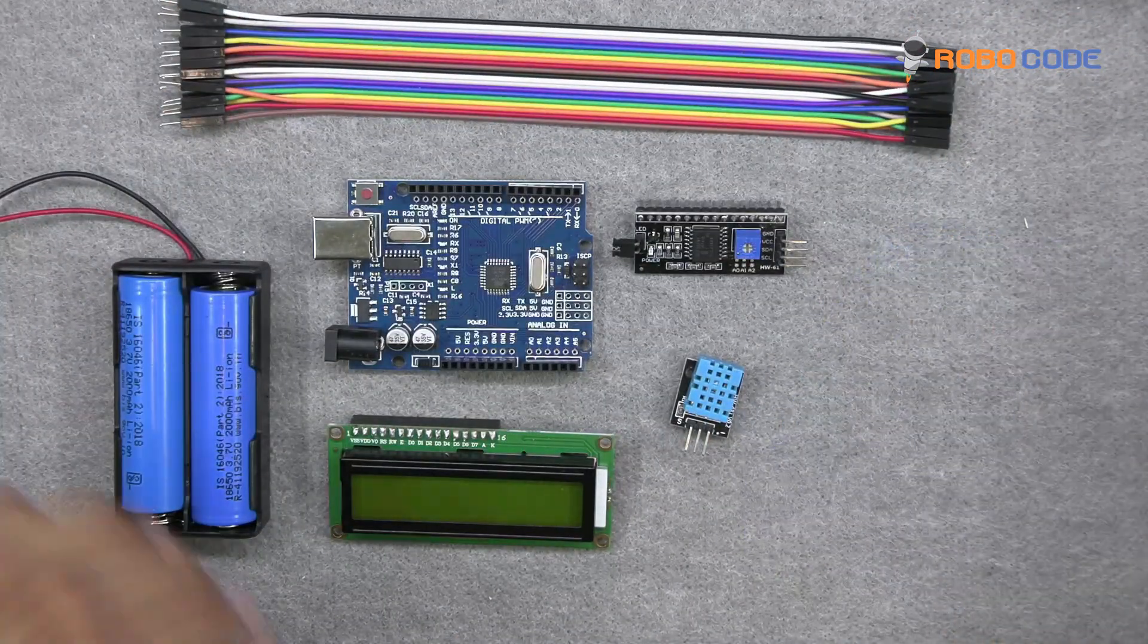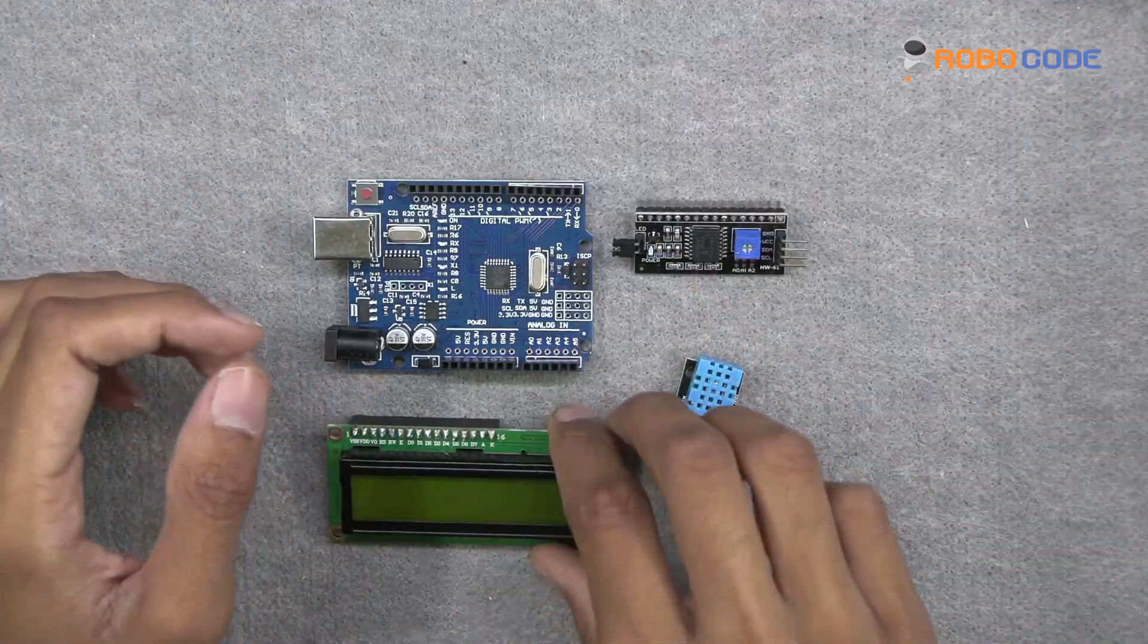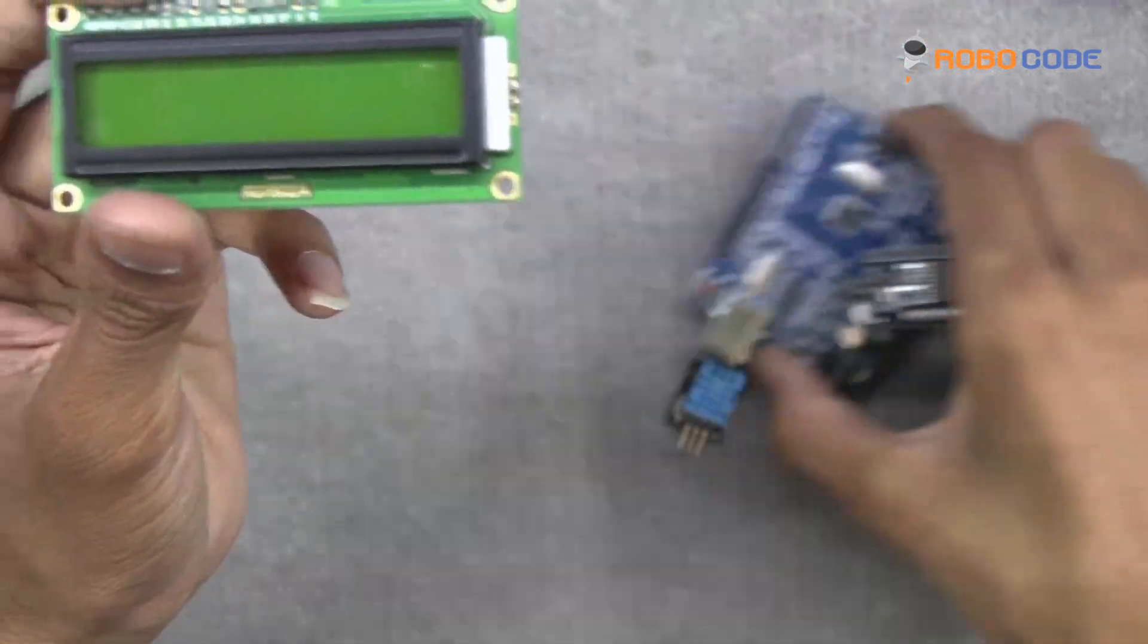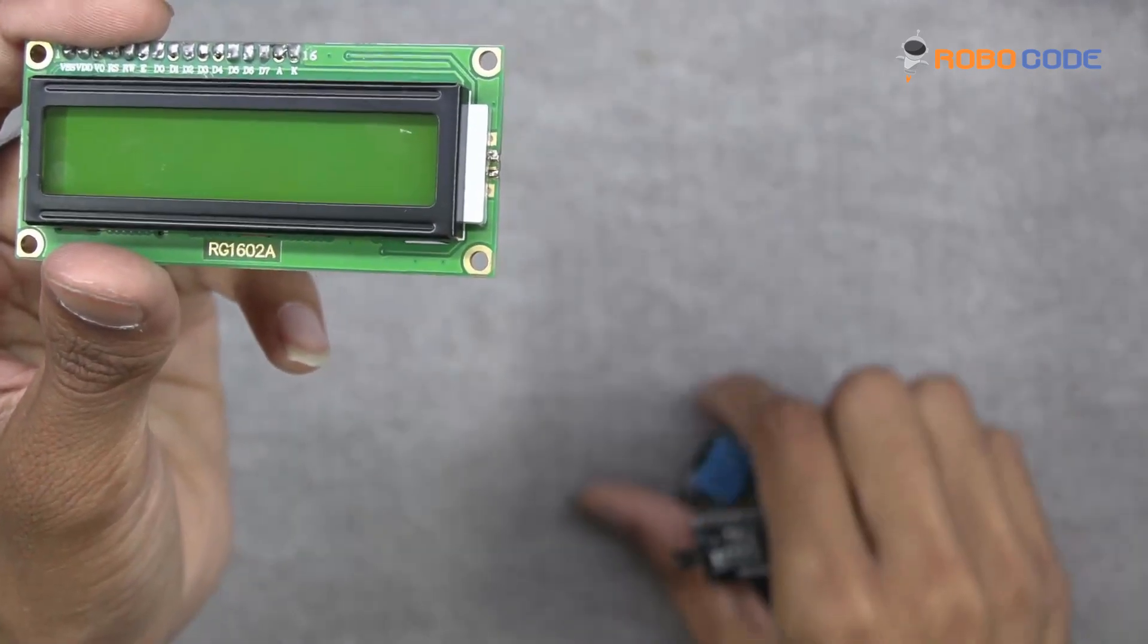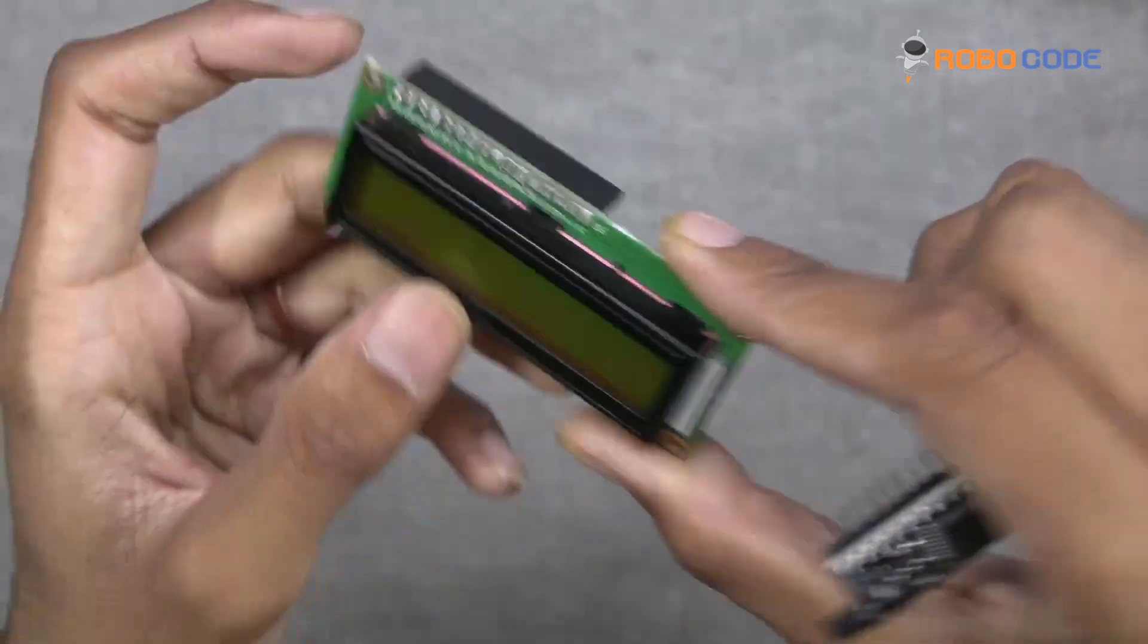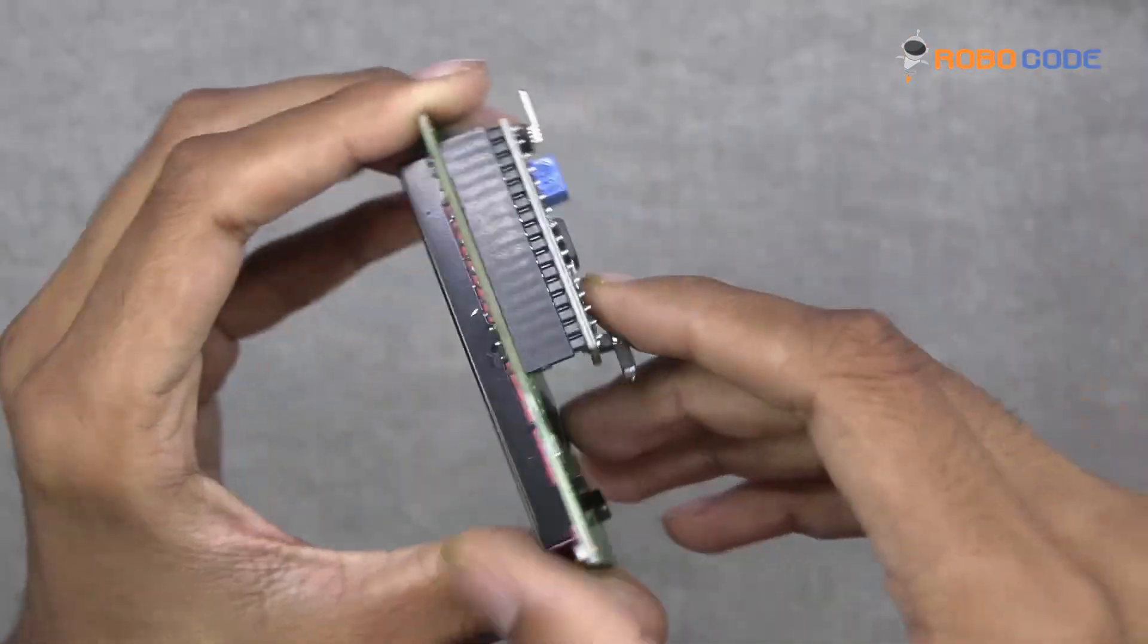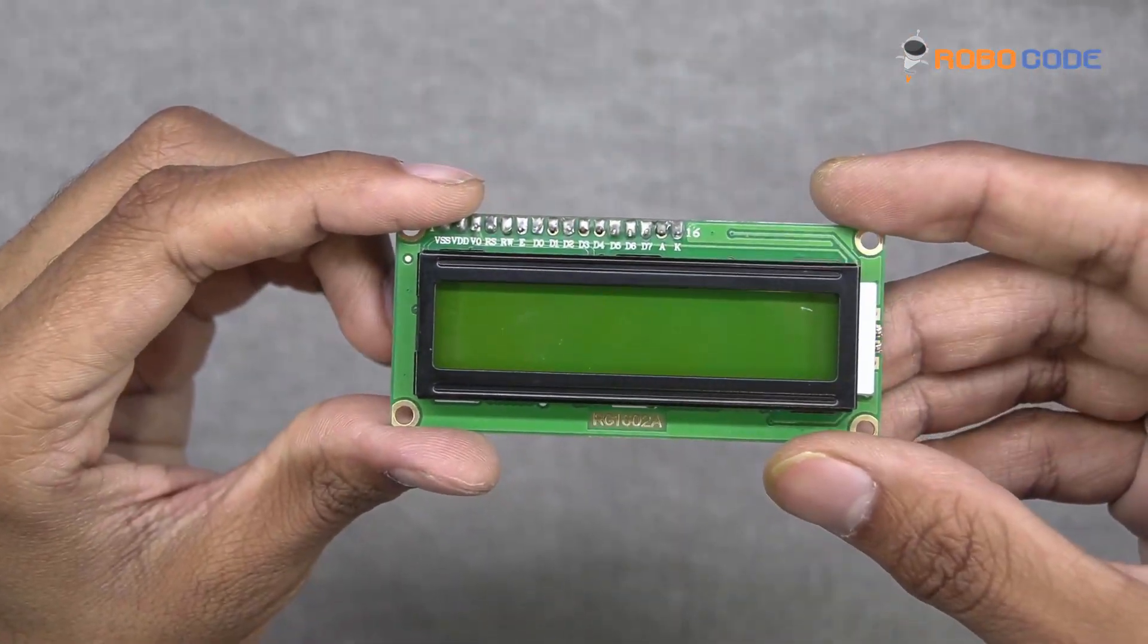Now let's design the circuit. We will take the 16x2 LCD display and the I2C display module and we will connect both boards as you can see in this video. We will have the exact number of pins which will go in the 16x2 LCD display.